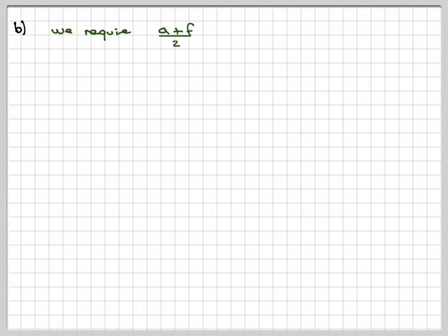Now we're required to find the mean of the first and last marks, (A+F)/2. So (A+B)/2 + (B+C)/2 + (C+D)/2 + (D+E)/2